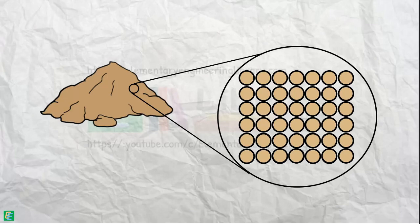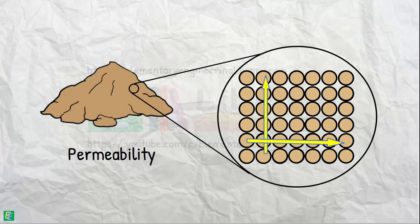then properties of soil like permeability will be the same in all directions, and we say that soil is isotropic.